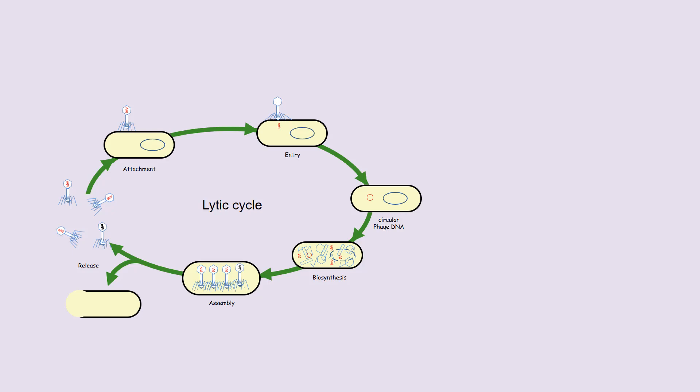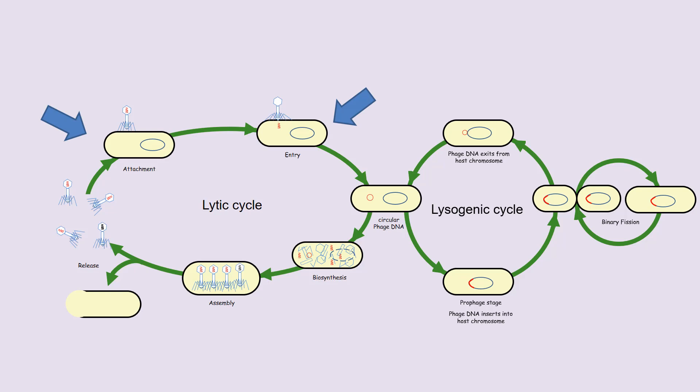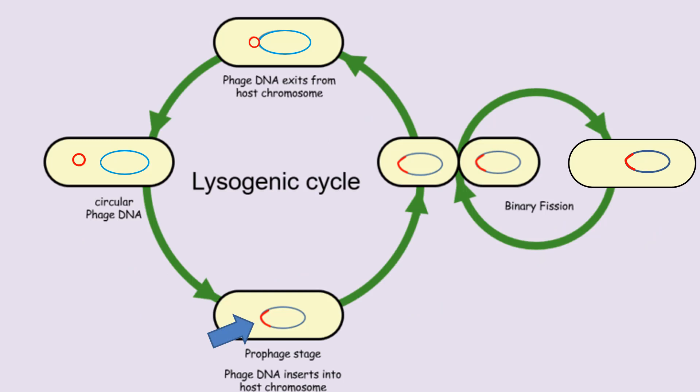Besides the lytic cycle, phage also have a lysogenic cycle. In this case, the attachment and entry stages remain the same, but instead of the DNA circularizing on itself, it will insert itself inside the new host's chromosome. This bacteriophage DNA is now called a prophage, to denote the fact that it has become part of the host chromosome and is no longer independent. As this bacterial cell grows and divides by binary fission, the phage will replicate along with the host chromosome, and thousands if not millions of new bacterial cells will be made, all of which will also contain the prophage as part of their chromosomes.